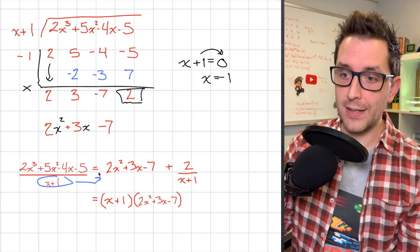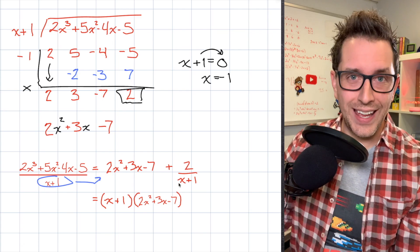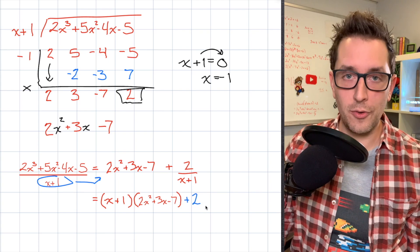Well, since I'm multiplying the entire right side by x plus 1, well, that x plus 1 in the denominator is going to cancel out and what I'm going to be left with is my remainder of 2 being added at the end of my expression.